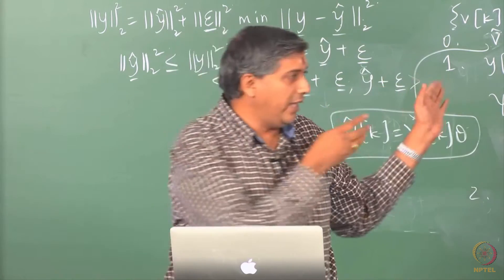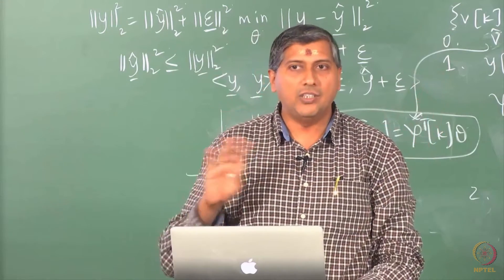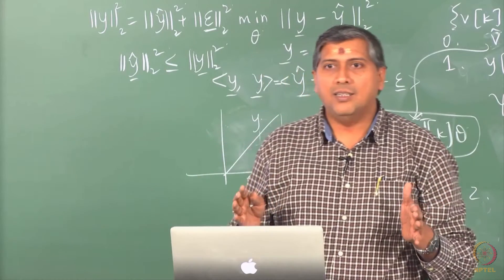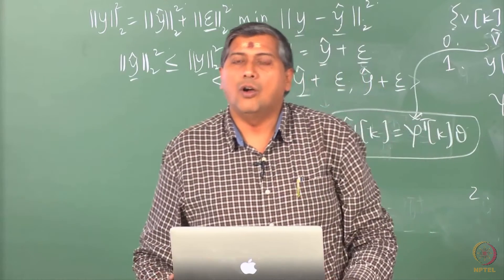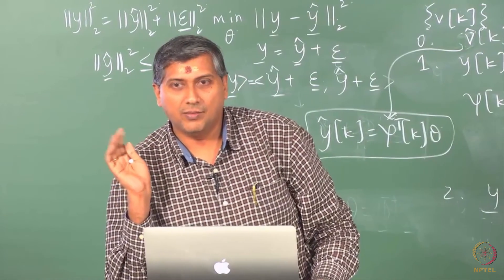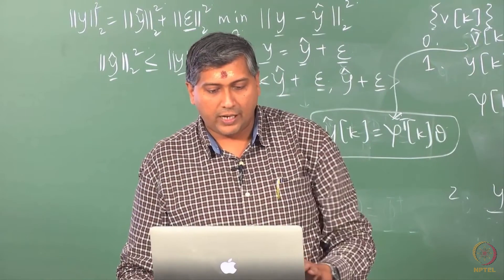For a fixed set of regressors, suppose phi is deterministic, in the AR case it is not, but in general if phi is fixed, then what does it mean expectation of Z as long as that is 0, I will get unbiased estimates, right? So that is what the condition is.